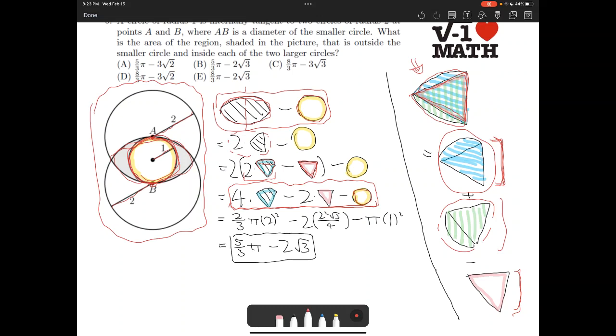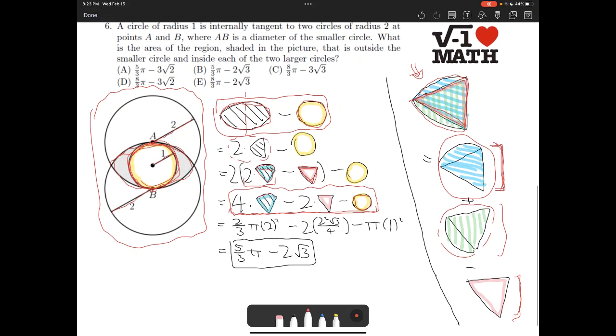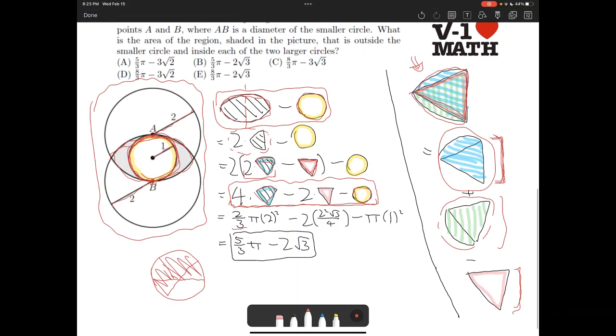Now we just plug in formulas. Notice that this 60-degree arc times four is two-thirds of a circle. We can see it here, two-thirds of a circle. So this is 2 over 3 times pi times 2 squared, where 2 is the radius.